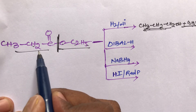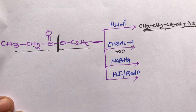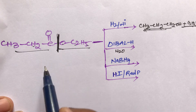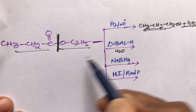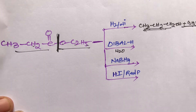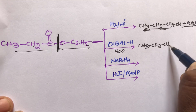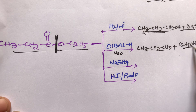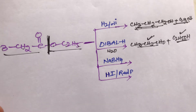When the ester reacts with DIBAL (diisobutylaluminum hydride) in the presence of water, DIBAL can also reduce the ester group. Bond cleavage occurs and two types of products are produced: one is an aldehyde (CH3-CH2-CHO) plus one is an alcohol (C2H5OH).